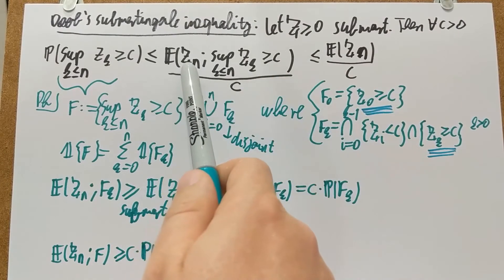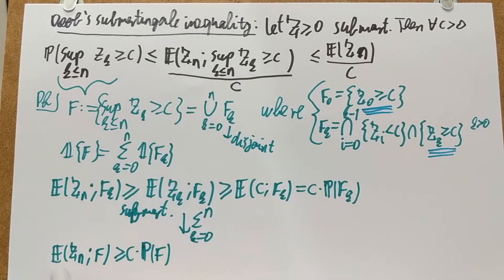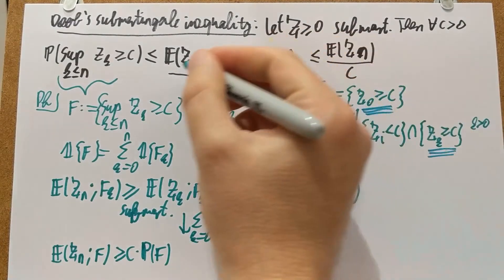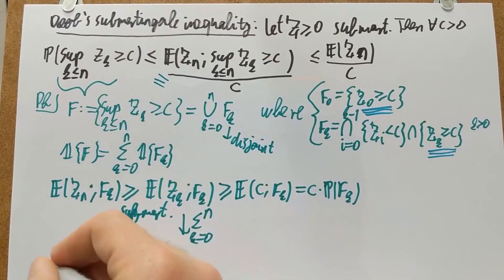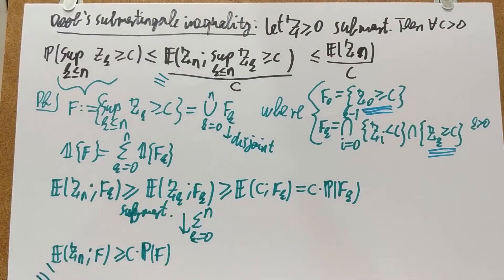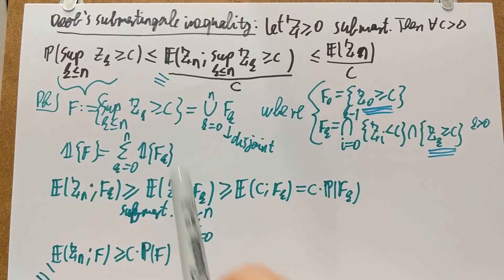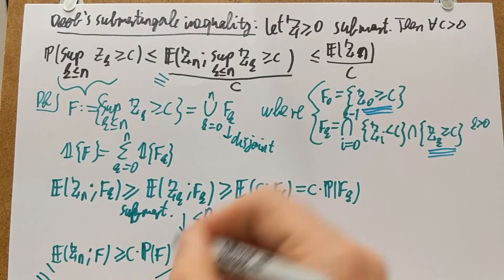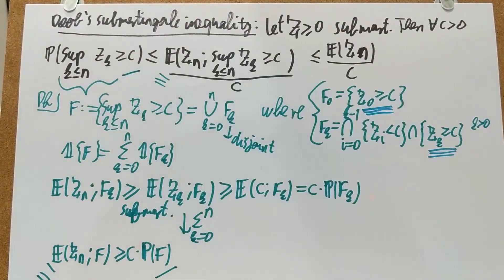I have the expectation of Z_N on that event. So this part here is exactly that part there. And if I divide by the constant C, then on the other side, I have the probability of F. And F was exactly this same event there. So that's my left-hand side here. And I'm done with the proof.